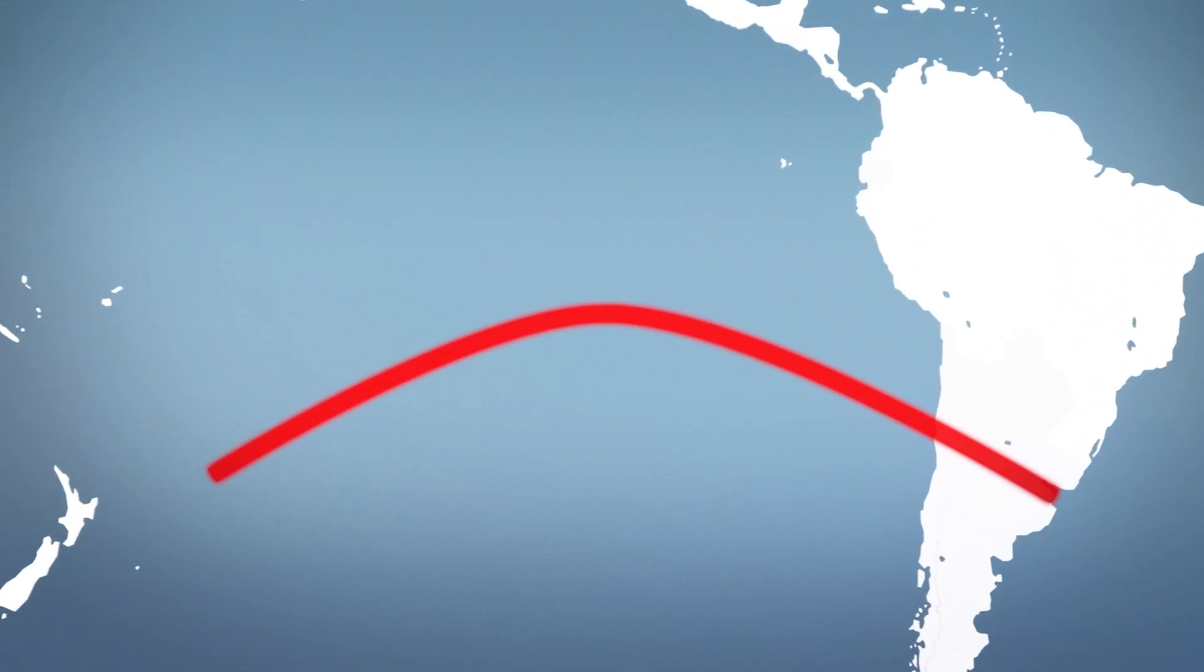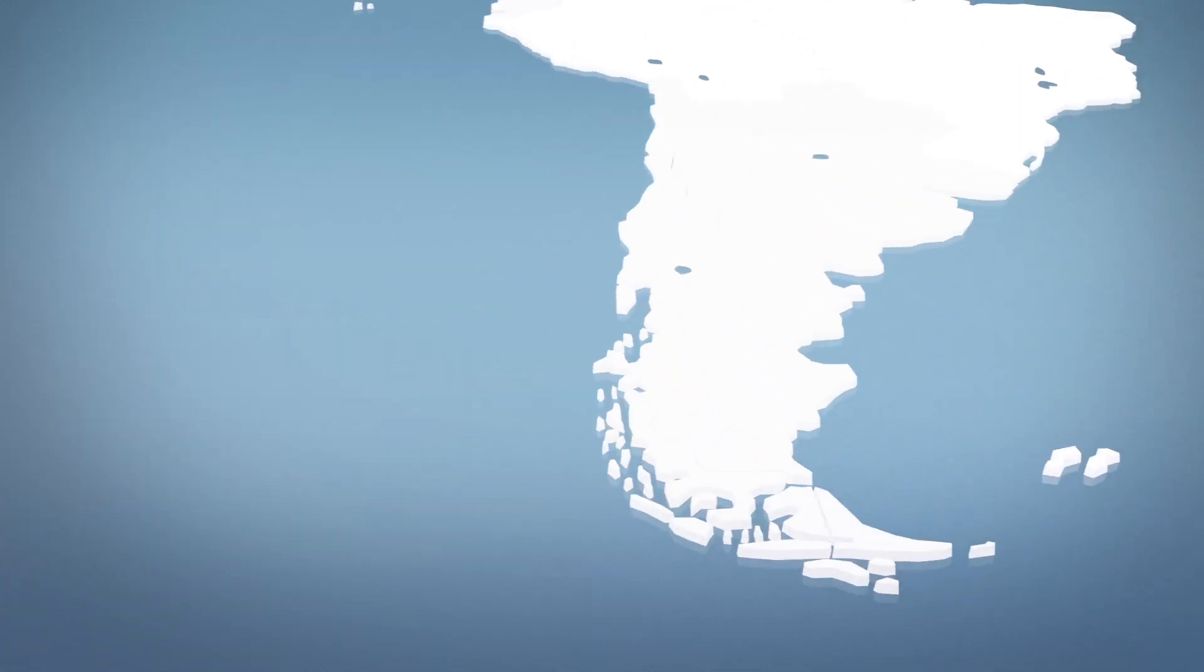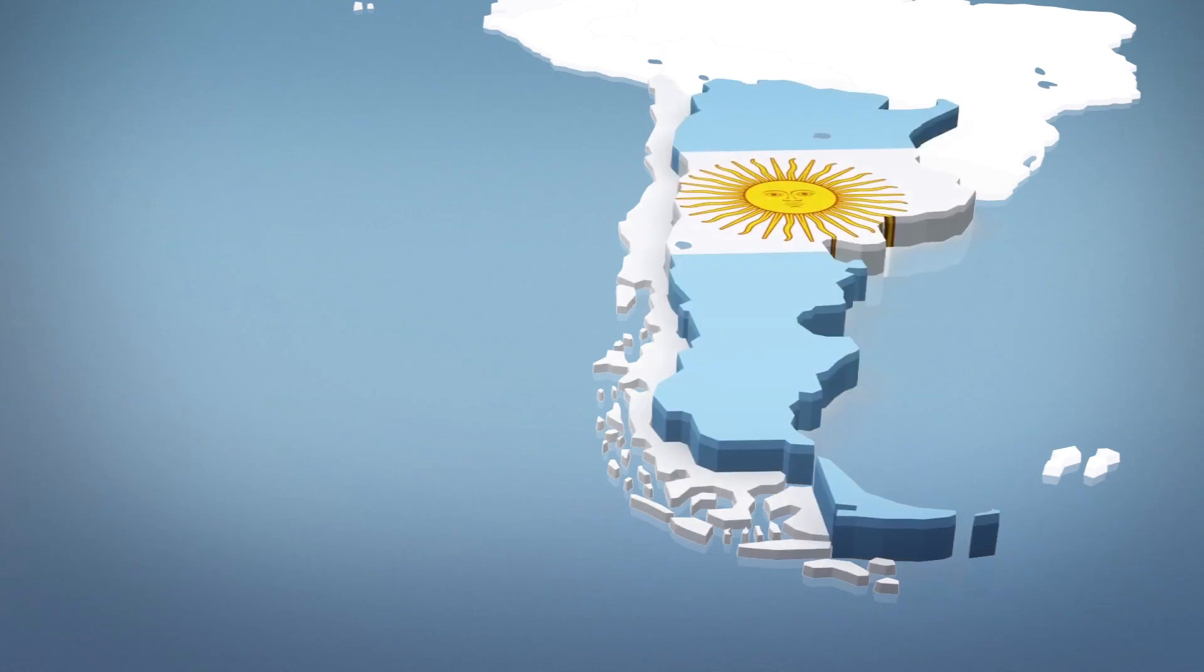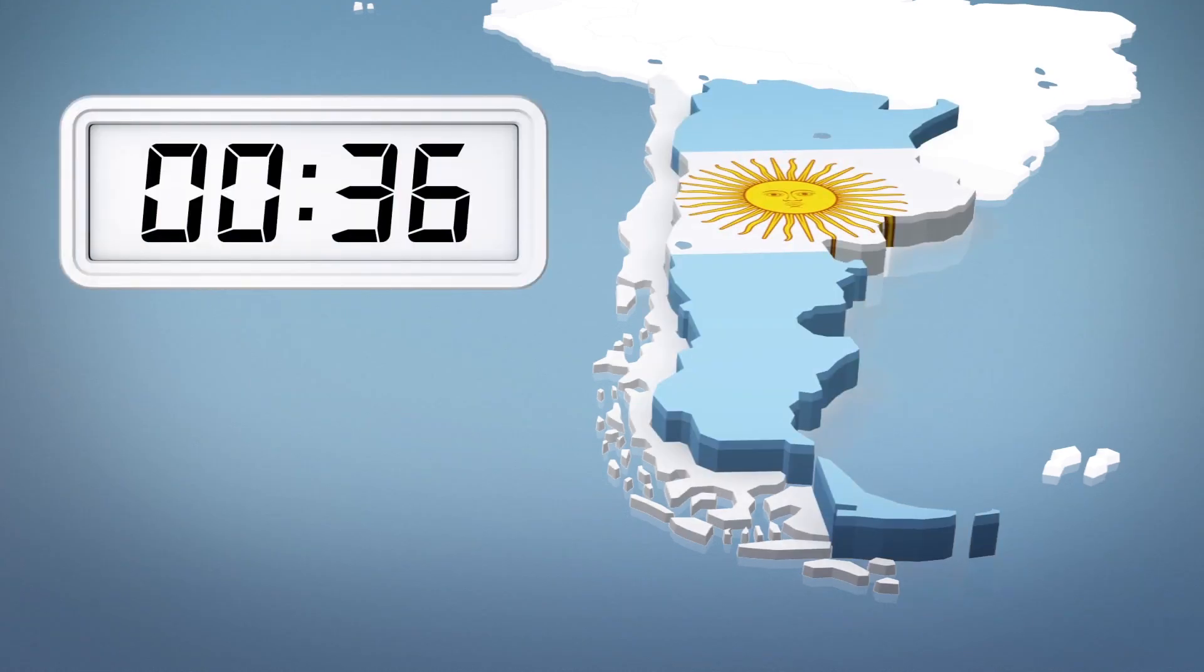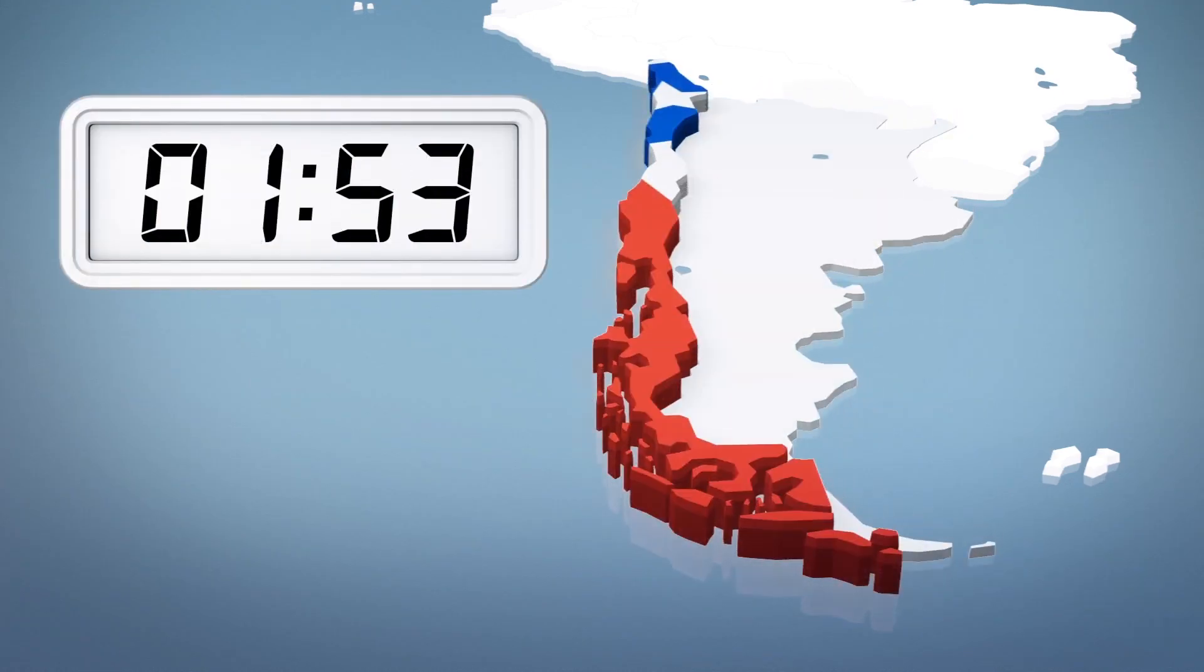Parts of Chile and Argentina will be in the path of totality, but only for a brief window of time. The Independent reports that viewers in San Juan, Argentina can expect to see 36 seconds of totality, while those in La Silla, Chile may be able to view it for 1 minute 53 seconds.